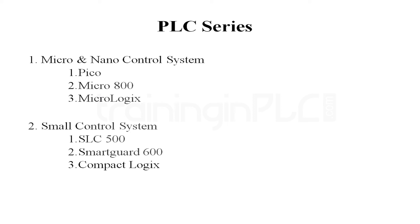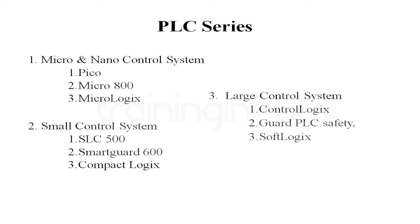Next is the small control system. In this category you can find Compact Logic, Guard Logic, and SLC 500. These are all the types that come under the small control system, and they are apt for medium scale industries.